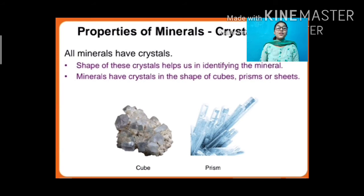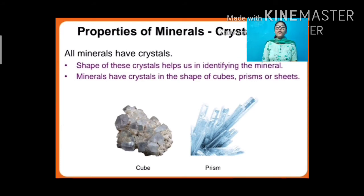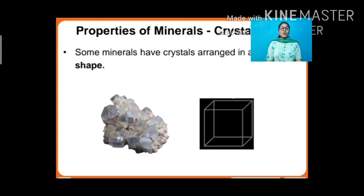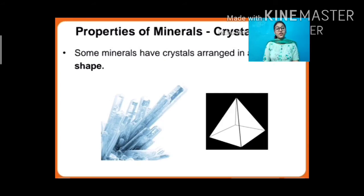The second property is crystal. All minerals have crystals, and the shape of these crystals helps us in identifying the mineral — with the shape we can identify which mineral it is. Minerals have crystals in the shape of cubes, prisms, or sheets. Some minerals have crystals arranged in cube shape, and some minerals have crystals arranged in prism shape.